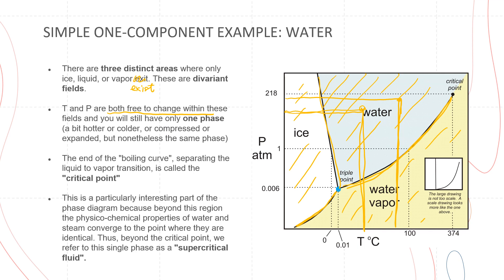At the end of the boiling curve separating the liquid-to-vapor transition, there is a critical point. Beyond this region, the physical and chemical properties of water and steam converge to a point where they are identical, and beyond this point we refer to it as a supercritical fluid. That's the simple one-component example for water.